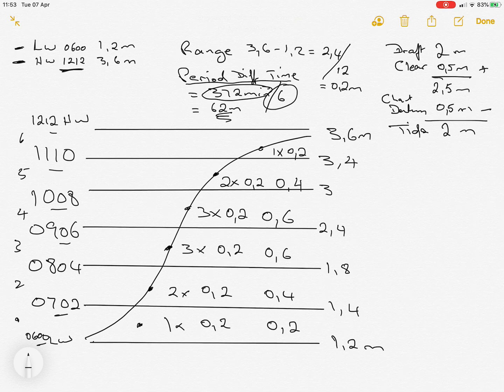What we also need to do is look at the difference, in other words the range, which is 2.4 meters. We're going to get 1+2+3+3+2+1, which equals 12 units. We need to work out how much each unit is, so we divide by 12 and end up with 0.2 meters per unit.